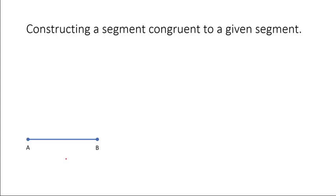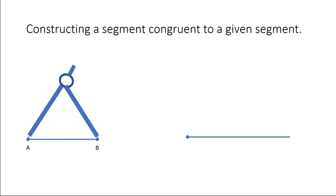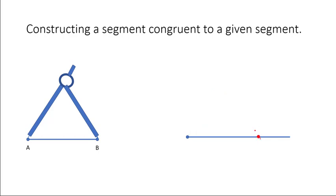What you want to do is begin by starting with a beginning point and then drawing any random line, and make it longer than what the line we're trying to copy is. Then you take your compass and put the needle point end on one point, and the pencil end on the other point. You pick up your compass, bring it over to the new segment, place the needle point on the endpoint, and mark off where that would be on this line. You will have this new point right there, and you can erase the remaining part outside of it — and we have this segment.